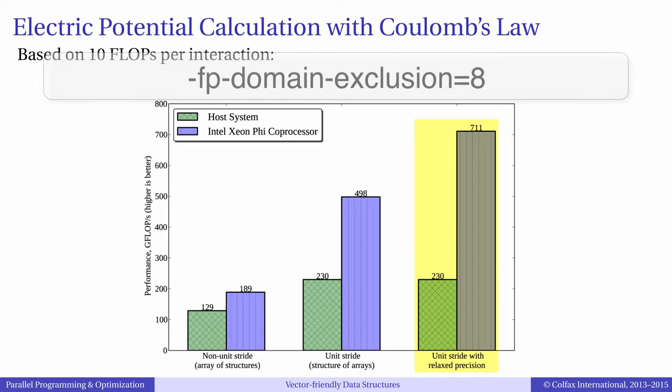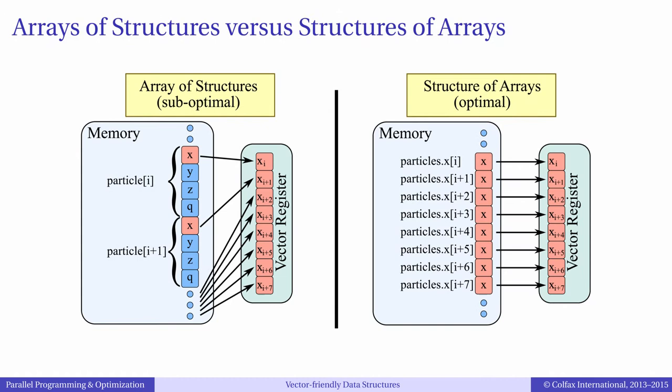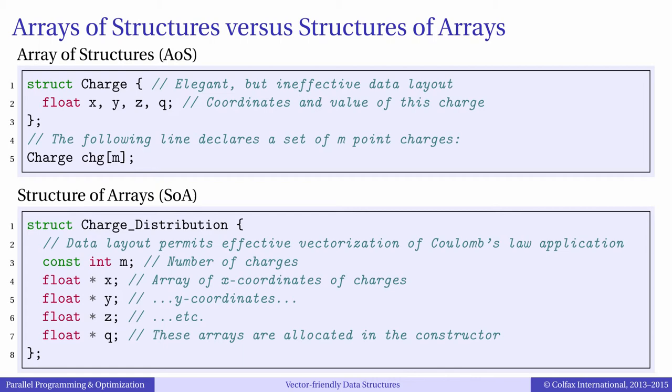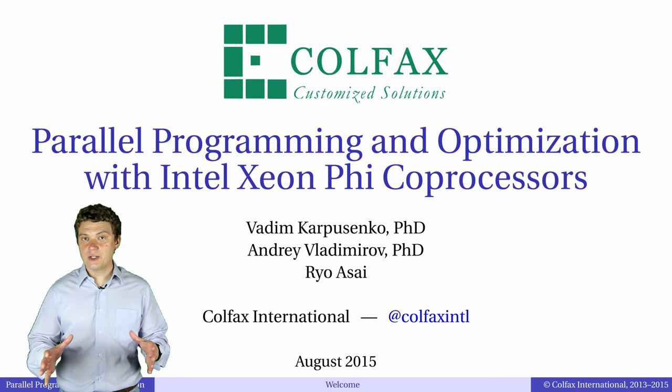In fact, if we further relax the floating-point precision requirement and use the argument of pdomain exclusion 8, the Xeon Phi performance improves further to 700 gigaflops per second. Conversion of data structures to such a layout that vector operations can use unit-stride loads and stores is always a very important step in performance optimization. As we can see, the performance improvement can easily be more than a factor of 2. At the same time, this is often the most difficult optimization to implement in an already existing application, because the syntax of data accesses has to be rewritten in the entire code. For new applications, it makes sense to think carefully about the data layout before starting to develop the code.